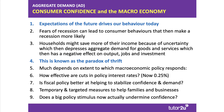Fears of recession can lead to consumer behaviours that then make a recession more likely. If people fear a downturn, they might decide to save more of their disposable income due to uncertainty, which depresses aggregate demand. The propensity to save goes up, the marginal propensity to consume goes down. This has a knock-on negative effect on output, jobs and investment, and could lead to a fall in real incomes — a concept widely known as the paradox of thrift.